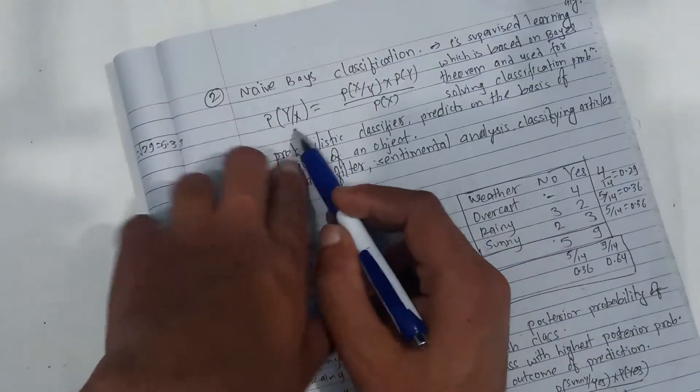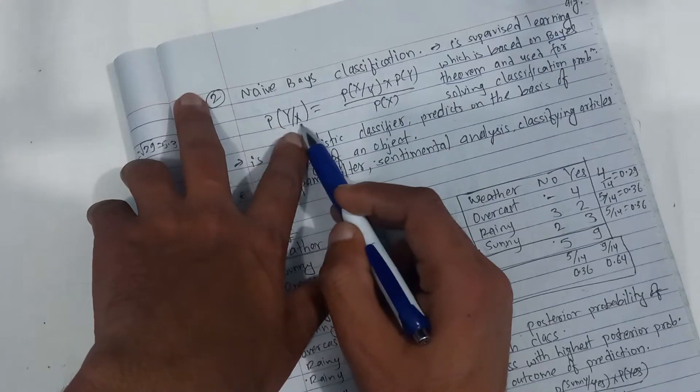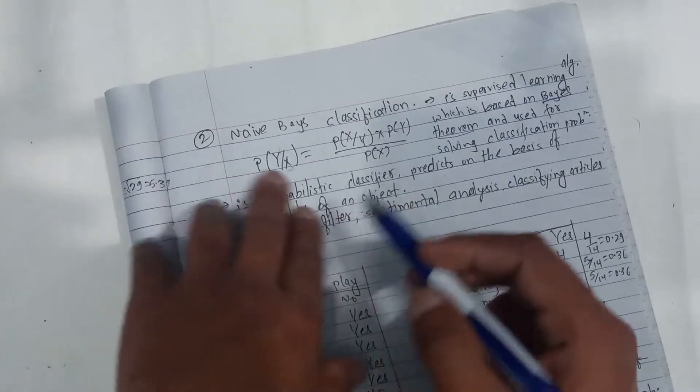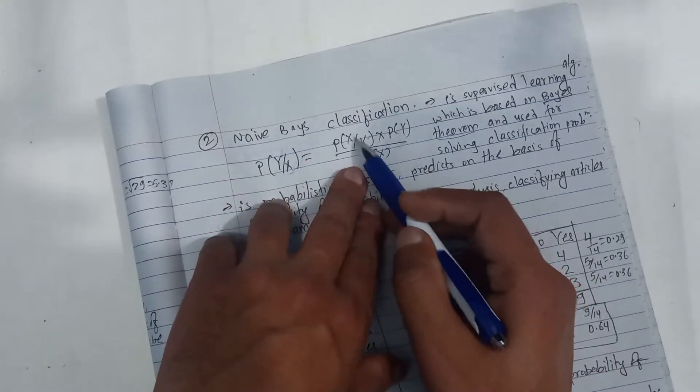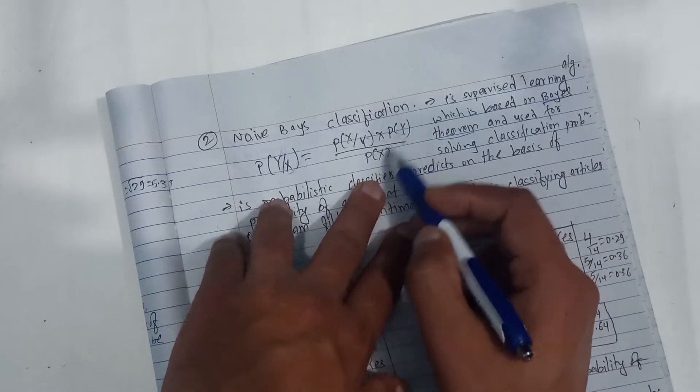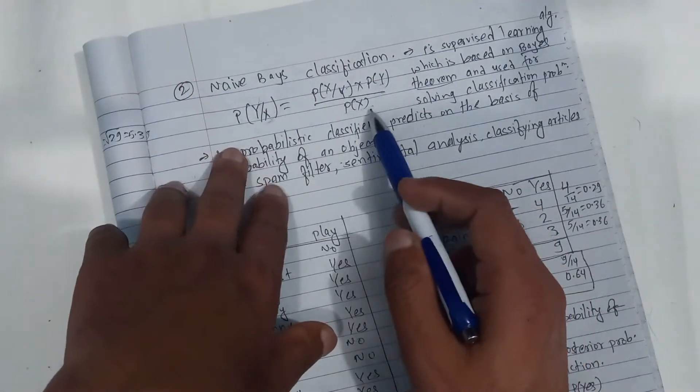This is the formula: probability of Y given X equals P of X given Y times P of Y divided by P of X.